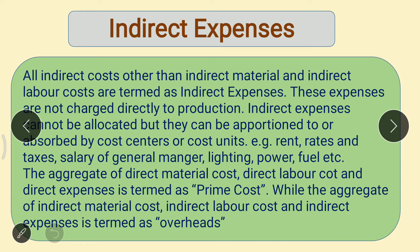The aggregate of direct material cost, direct labor cost, and direct expenses is termed as prime cost, while the aggregate of indirect material cost, indirect labor cost, and indirect expenses is termed as overheads.